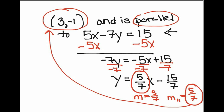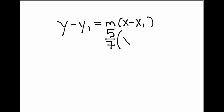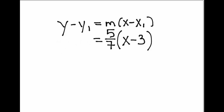Let's write our formula down. The point-slope form is: y minus y1 equals m times (x minus x1). I need to plug in my slope — which is 5 over 7 — and my point. So x minus 3, and on the other side y minus negative 1. Those two negatives come together and make it positive, so let's just write y plus 1.